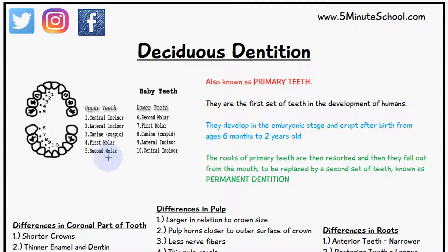Please note that we don't have any premolars and we don't have a third molar. You can see here the occlusal surface of what the teeth look like, and there are 20 teeth altogether.